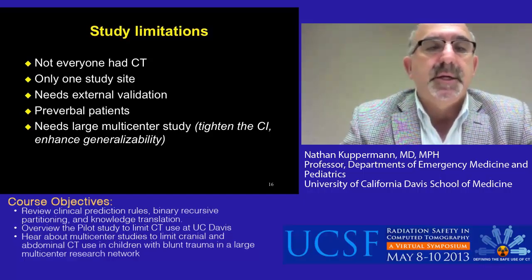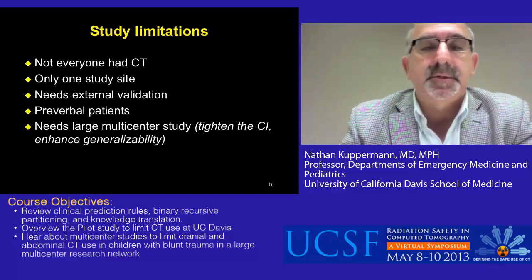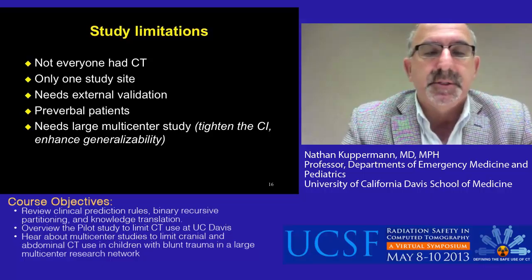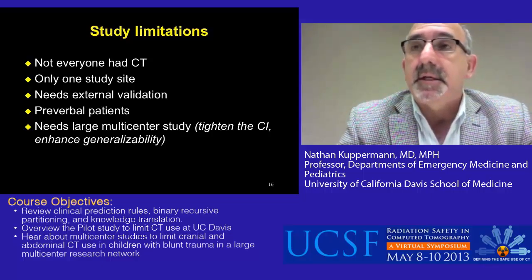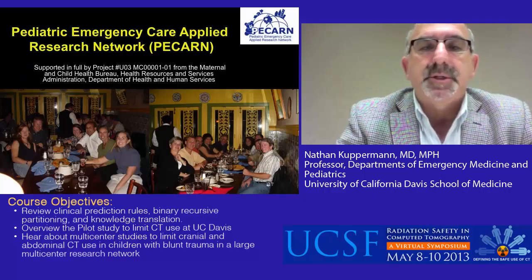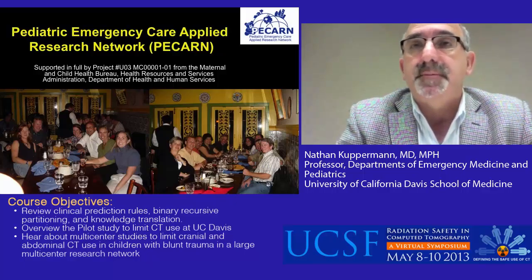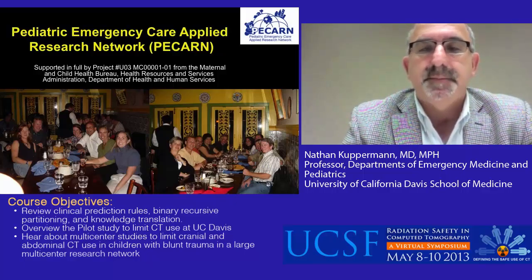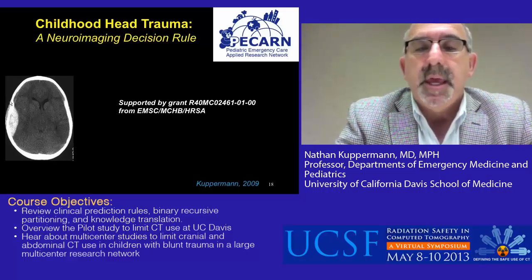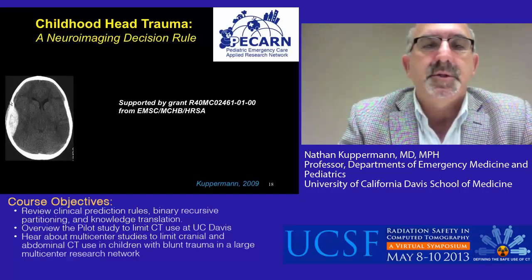This study had limitations. Not everyone had a CT scan performed, it was done only at one site at UC Davis, and it needs external validation. Ideally, you would need a separate rule for preverbal patients, who are different to evaluate than verbal patients. Ultimately, one needs a large multicenter study to tighten the confidence intervals around the test accuracy and enhance generalizability. For that, we turned to the Pediatric Emergency Care Applied Research Network — a federally funded research network supported by HRSA to conduct large observational and interventional trials. We performed a study funded by the Emergency Medical Services for Children program and the Maternal Child Health Bureau of HRSA to further validate and refine the clinical decision rule we performed at UC Davis.